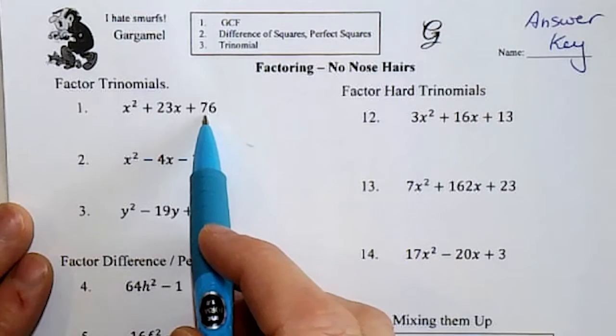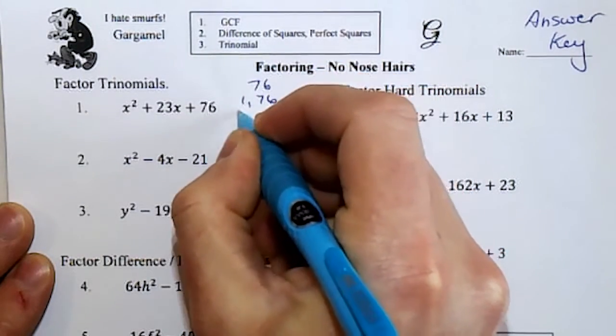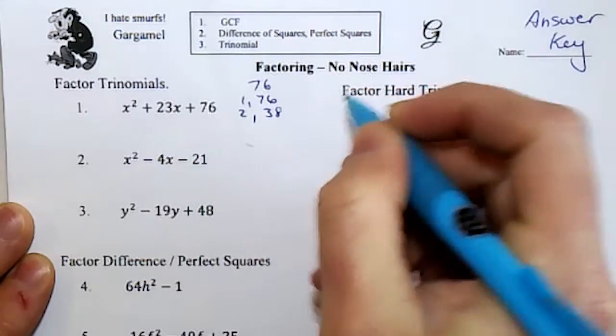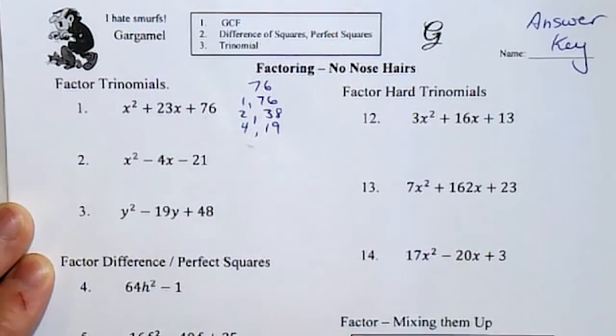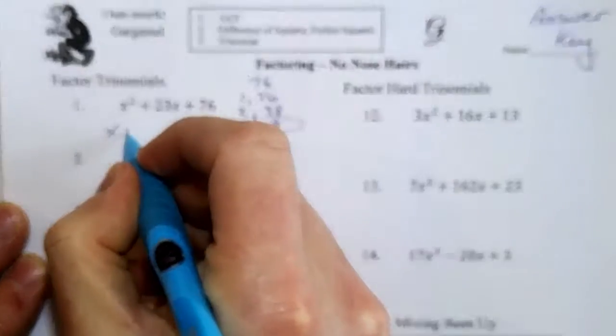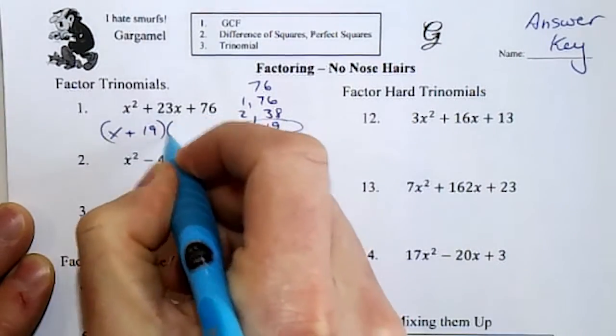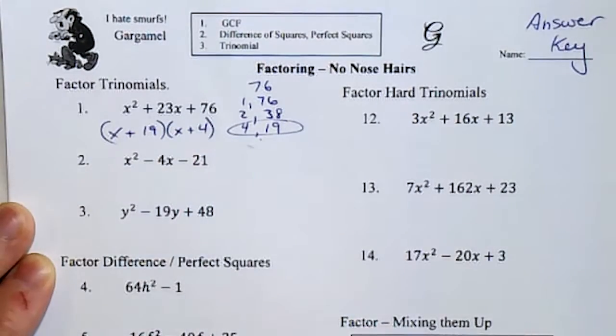So for trinomials, we're always going to focus on the third number. List the factor pairs, and once you find one that adds to 23, just be careful with the signs. It's positive, so this works.